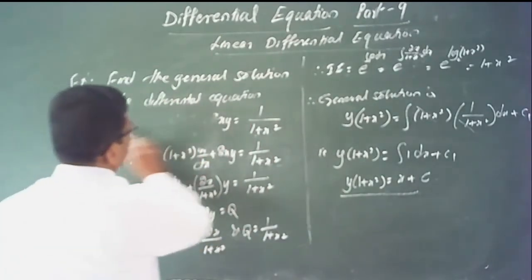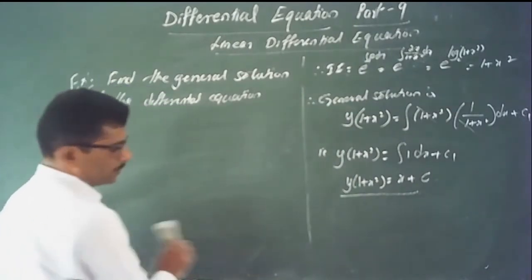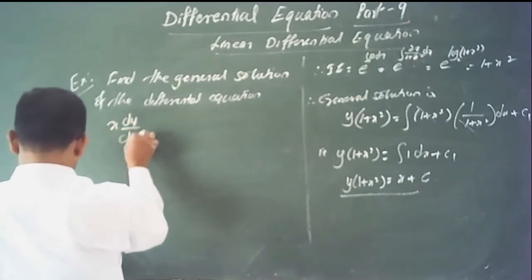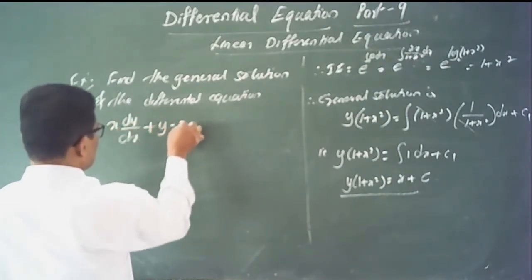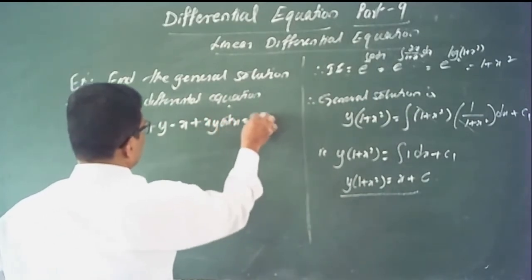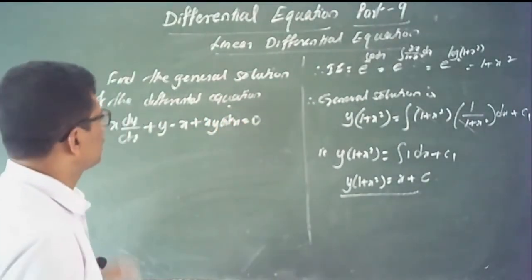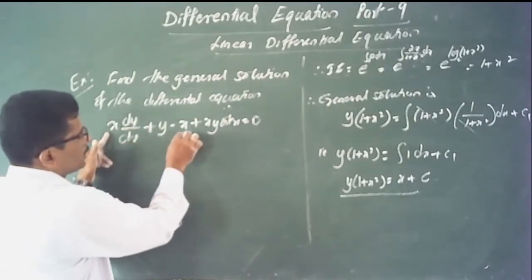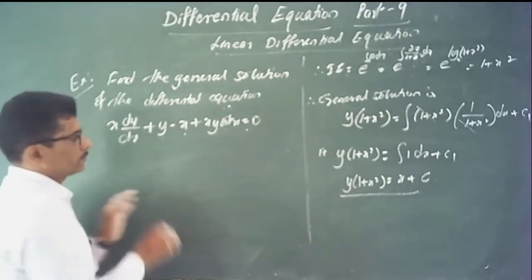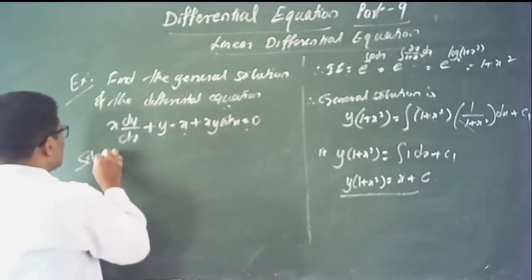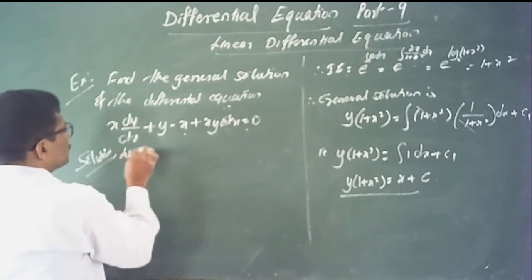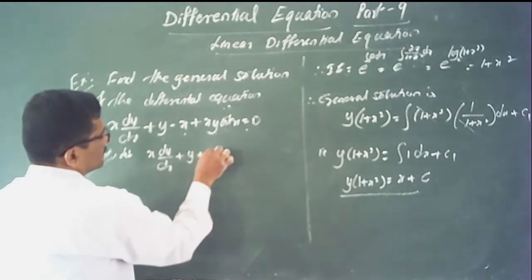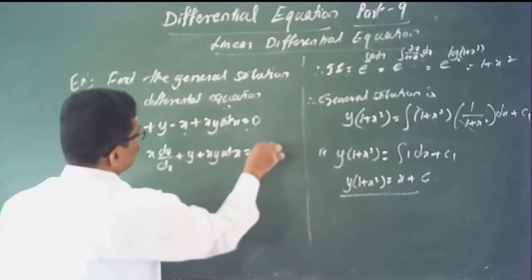Next example: find the general solution of the differential equation x dy/dx plus y minus x plus x times y times cot x equals 0. First, rewrite into standard form. The given equation is x dy/dx plus y plus x times y times cot x equals x, moving minus x to the right-hand side.